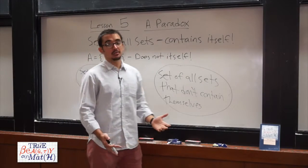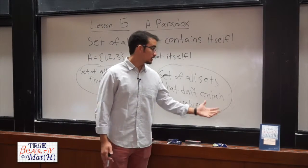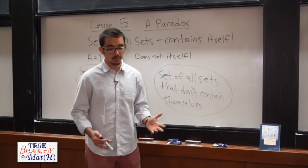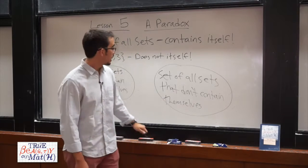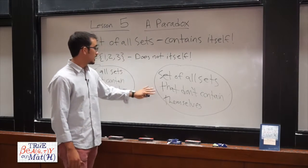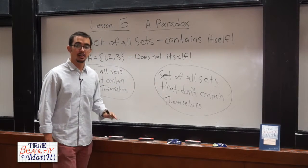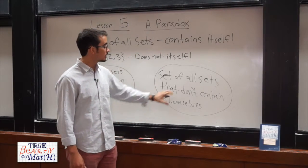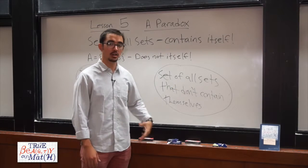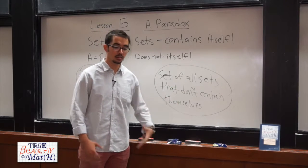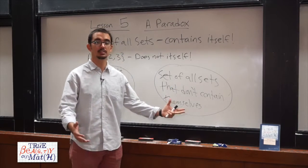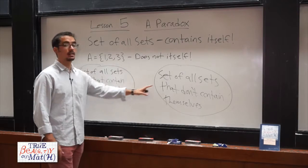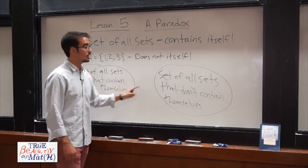So where have we gone wrong? That's Russell's paradox. Bertrand Russell came up with this paradox, and it totally shattered all of set theory. There are now lots of smart people who are trying to figure out what the axioms of set theory really are, to make it so that we don't run into paradoxes like this.